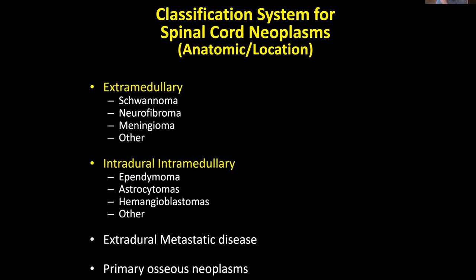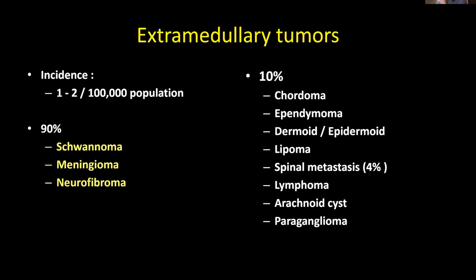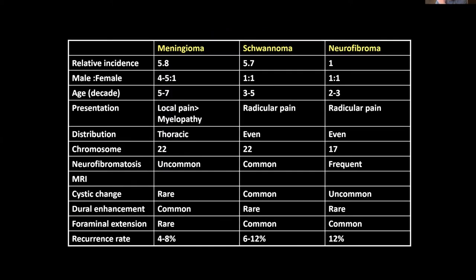Most of these tumors tend to be benign, but there are tumors — especially intramedullary tumors — that can be malignant and are very difficult to treat. Intramedullary tumors are more common in children. In the extramedullary space, most tumors are schwannomas, neurofibromas, and meningiomas. Inside the spinal cord, most commonly there are ependymomas and astrocytomas, as well as hemangioblastomas, which have elements of vascularity and are more like vascular malformations.